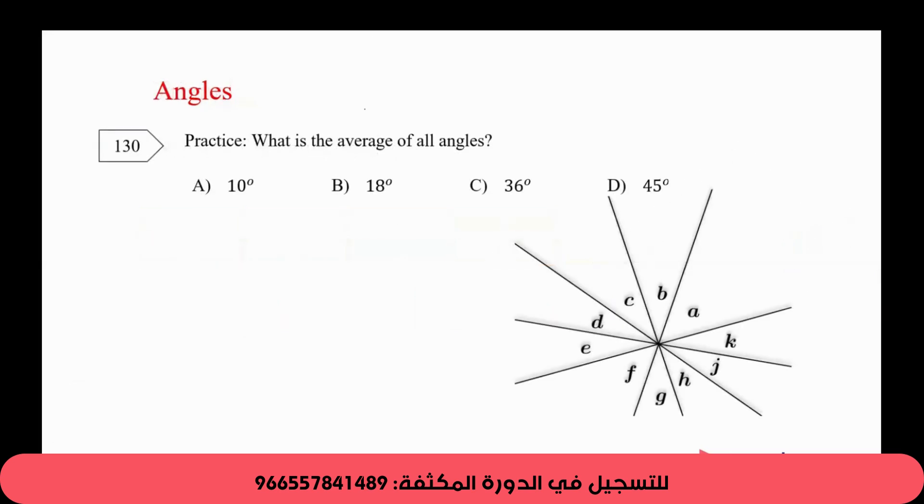Here we go. Now what's the average of all angles? I know that the average is the sum over the count. Can you guys tell me what's the sum of all these angles? 360. And what's the count? 10. Because we have 1, 2, 3, 4, 5, 6, 7, 8, 9, 10. So the average is 36 degrees. It's an easy and simple problem, but since they put it in geometry, it was hard. But it's just a simple problem. Do you see it?